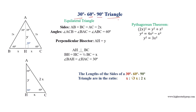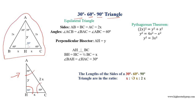A 30-60-90 degree triangle is a special right triangle. For example, triangle AHC is a 30-60-90 degree right triangle, which is half of an equilateral triangle ABC. The equilateral triangle ABC is bisected by the perpendicular bisector AH, which equals Y. This bisects the vertex angle A into two equal angles: angle BAH equals angle HAC equals 30 degrees, and bisects the opposite side BC into two equal parts BH equals HC equals X.